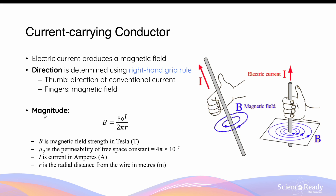The magnitude of this magnetic field due to the current in the conductor is given by the following formula. B, which is the magnetic field strength expressed in Teslas or T, is equal to μ₀, the magnetic permeability constant of free space. This number is found in the NESA physics data sheet, given as 4π × 10⁻⁷. This is multiplied by current in amps and divided by 2πr, where r is the radial distance in meters from the current-carrying wire at which you're measuring the magnetic field strength.